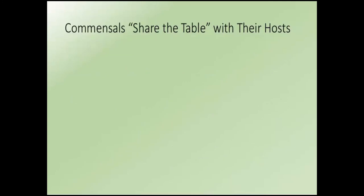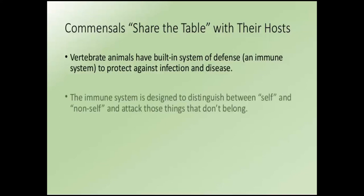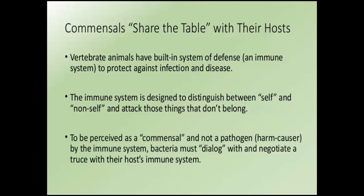What is a commensal? It is an organism that lives with another. The term commensal is defined as 'share the table.' Vertebrate animals have an immune system designed to distinguish between self and non-self. If a non-self entity is found, our immune system attacks things that don't belong. So if you are going to be a commensal organism, the bacteria have to come to some sort of terms with their host immune systems through what I refer to as dialogue — molecular communication — to negotiate a truce so they are perceived as friend and not foe.